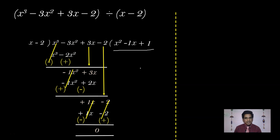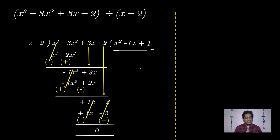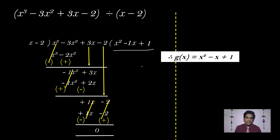So this is our g(x). To find the divisor, you have to subtract the remainder from the given polynomial, and then divide the resulting value by the quotient. Among the four values — dividend, divisor, quotient, and remainder — when three are given, you can calculate the fourth. We can write g(x) = x² - x + 1.